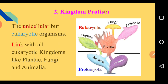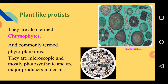The five groups of Kingdom Protista are: first, plant-like protists; second, animal-like protists; third, dinoflagellates. These five groups will be studied one by one.